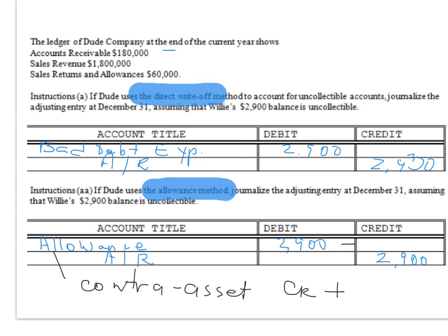Like any contra account, it will be presented right next to or right after the account it contrasts. So this one will appear right after accounts receivable on the balance sheet under other current assets. That's it — we're done with parts A and B for this exercise.